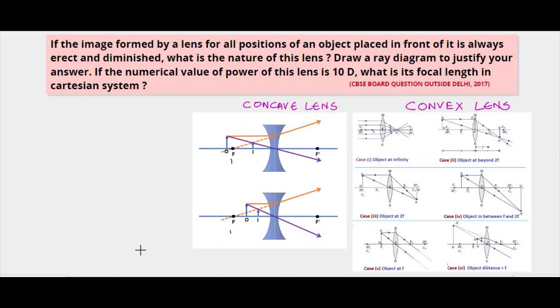If the numerical value of power of this lens is 10 D, what's its focal length in Cartesian system? Here we have been given a condition that the image formed by a particular lens is always erect and diminished. We have to find out the nature of that lens.